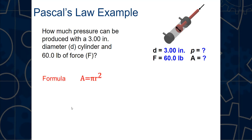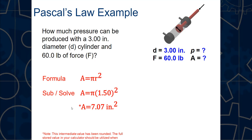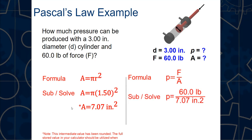First, convert diameter to radius and use area = π r². So: area = 3.14 × 1.5 × 1.5 = 7.07 square inches. Then apply Pascal's formula: pressure = force / area = 60 pounds / 7.07 square inches = 8.49 psi. So with a 3-inch cylinder at 60 pounds of force, we can produce approximately 8.5 psi.